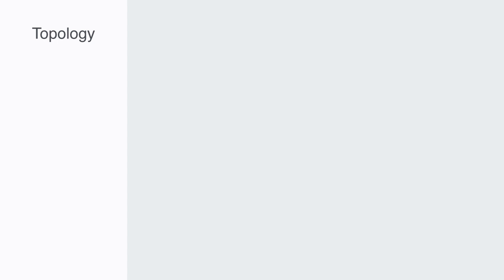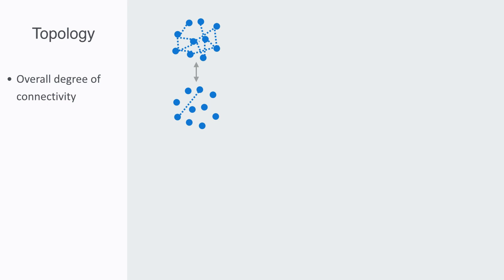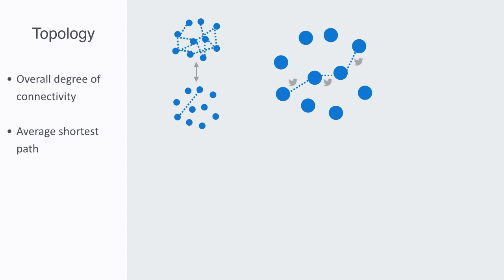Next, we need to look at the topology of the network to understand how something is likely to spread across it. The primary factor here is simply the overall degree of connectivity to the network — obviously, the more connected it is, the faster something should spread. We would also need to look at the average shortest path length to get an idea of how many edges a phenomena would have to traverse in order to affect the whole system.